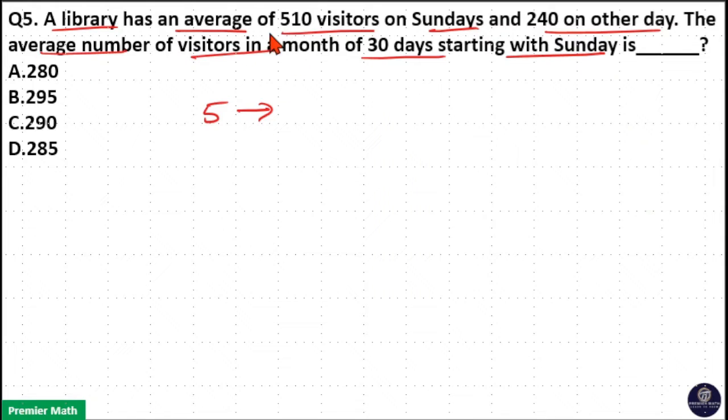Now, the average of Sundays is equal to 510. Average visitors on other days is equal to 240. Other days means total 30 days. 25 plus 5 is 30, so other days are 25. Average of 25 days is equal to 240.